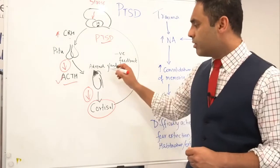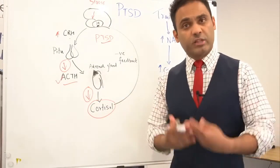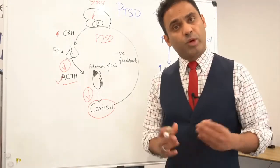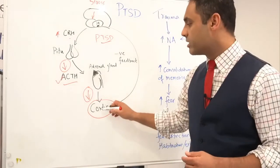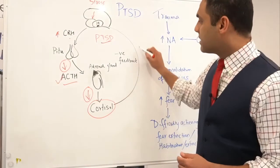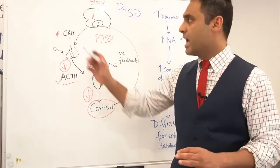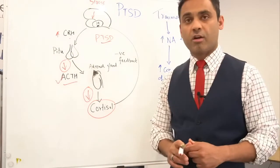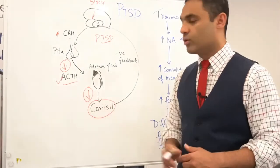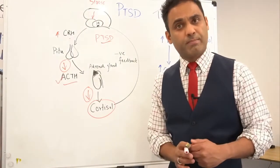The release of cortisol and further signaling to release cortisol exists in a negative feedback loop. When there is increased secretion of cortisol, it tells the hypothalamus to stop releasing any further CRH, which results in a decrease in ACTH and therefore a decrease in cortisol. That's the negative feedback loop.